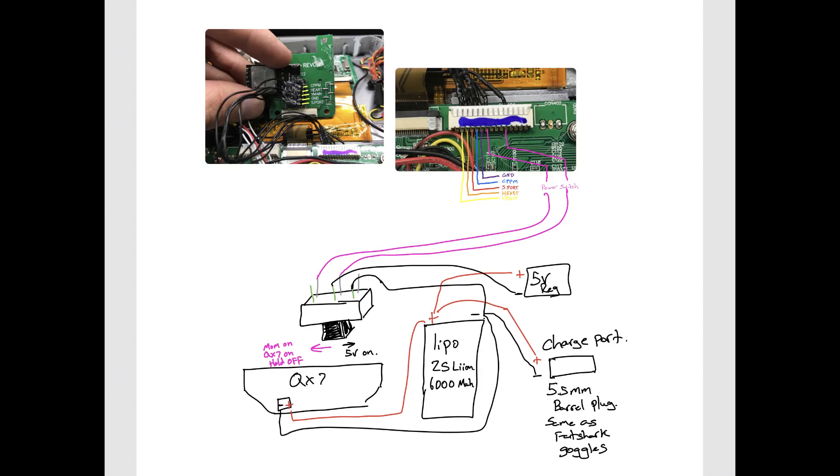For powering the whole system, normally I switch over to the left position and back to center to turn on the Tyrannus, then click it over to the other side which powers the 5 volt regulator, turning on the DVR, the LCD panel, and also the video receiver.